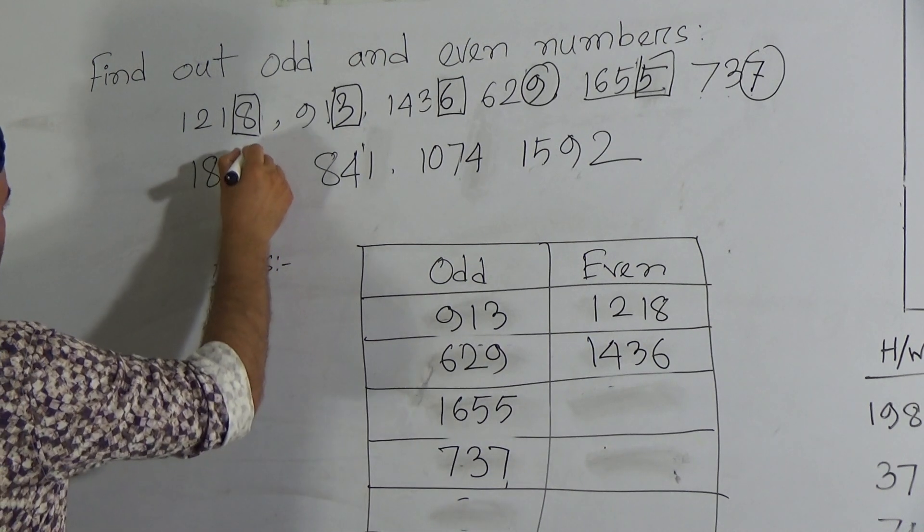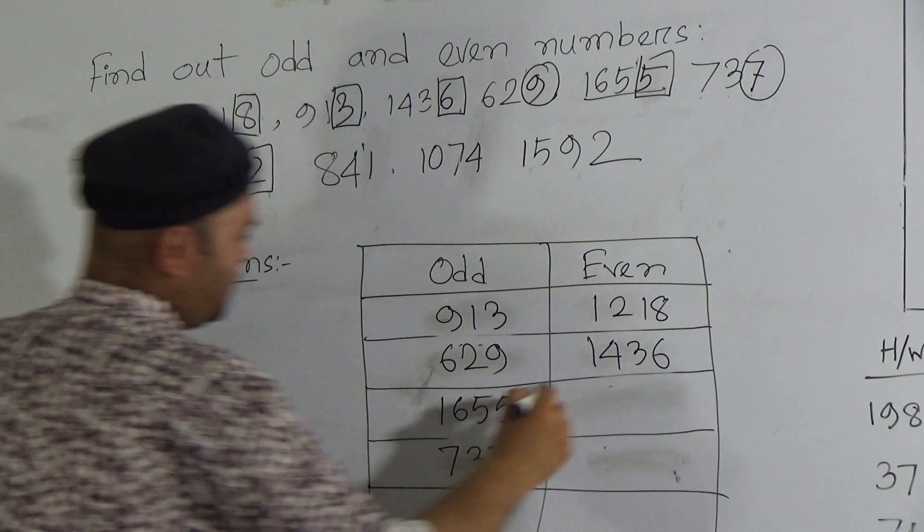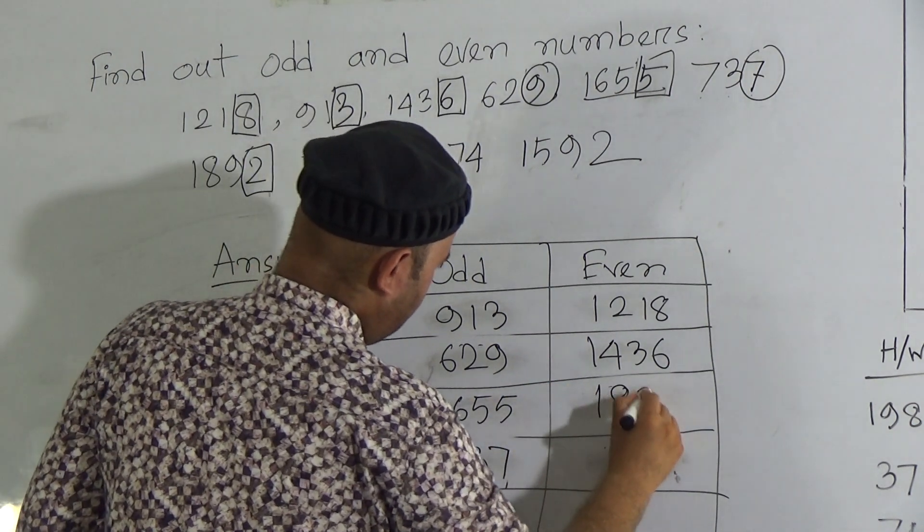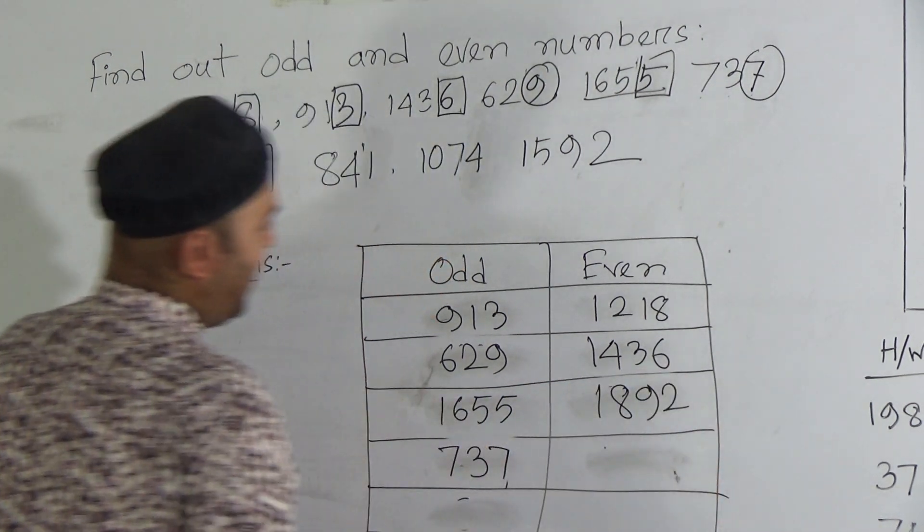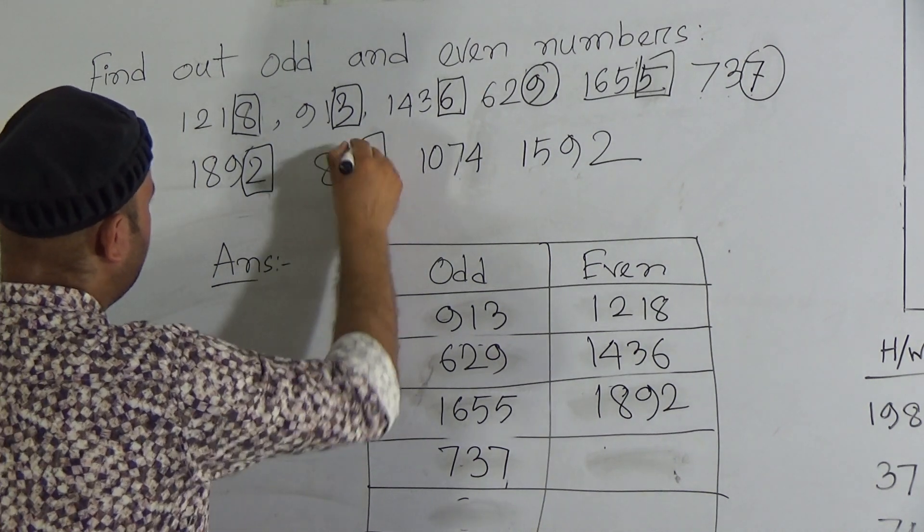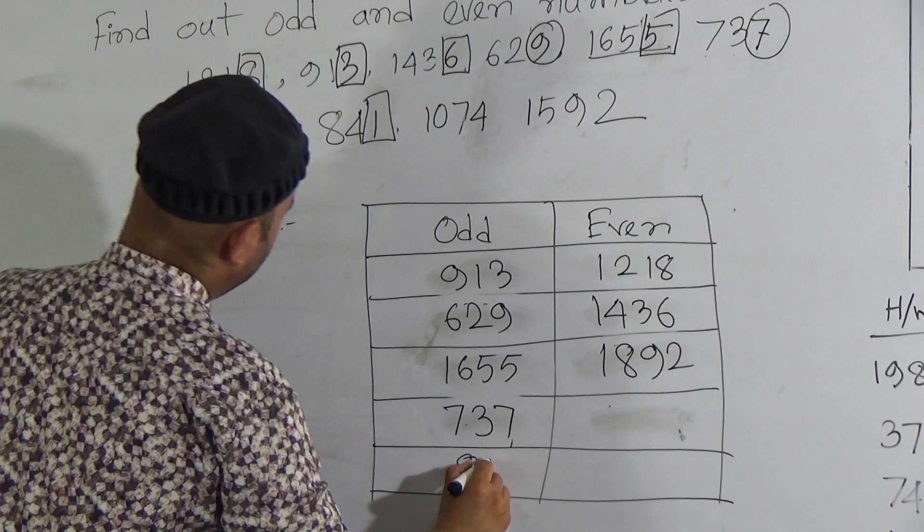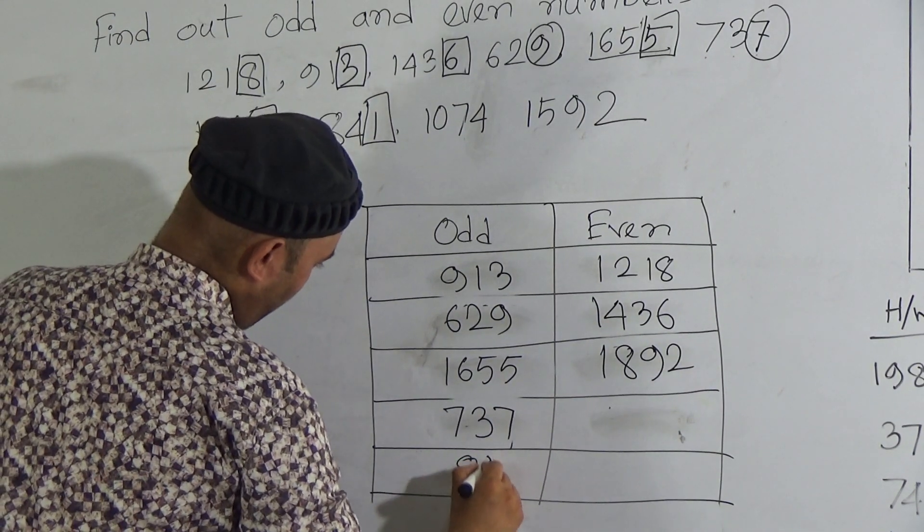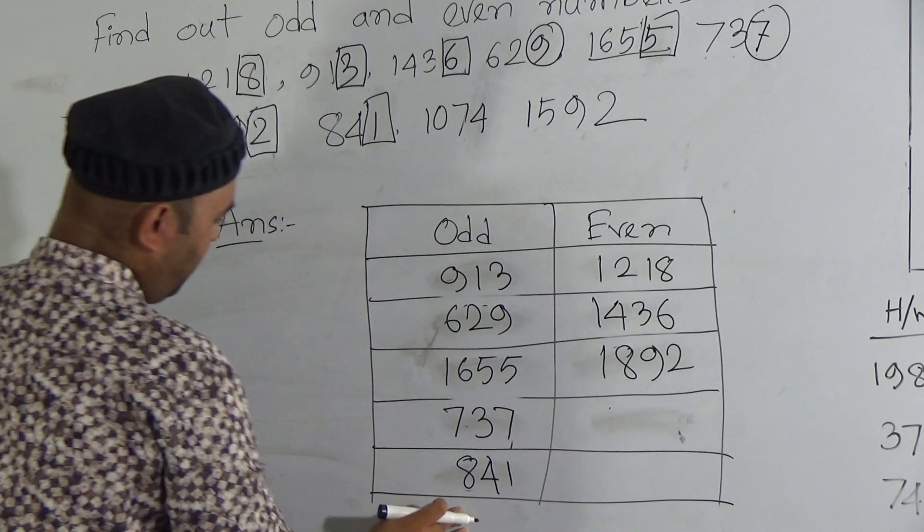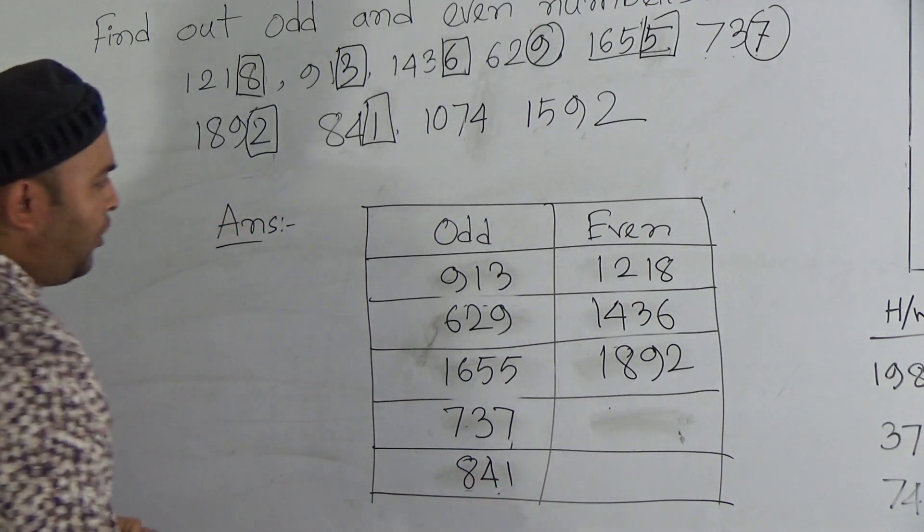Now, 1892. 2 is here, ones place digit. And we know that 2 is an even number. That's why 1892 is an even number. Now, the next one, 841. 1 is here, ones place digit. And we know that 1 is an odd number. That's why 841 is an odd number.